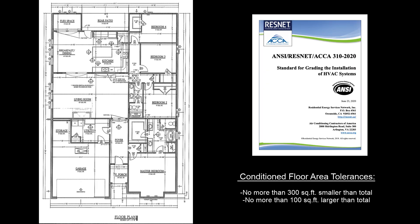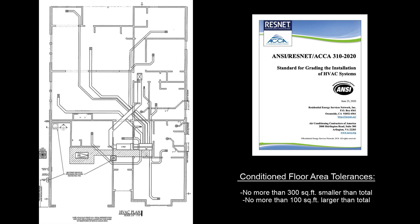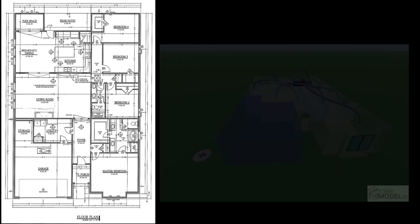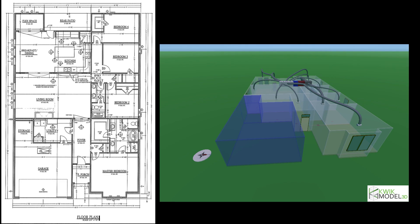Make sure the plans you use reflect the correct final layout of the house. Make sure that the conditioned floor area, window areas, and all of the exterior surface areas taken from the plans are reflective of the actual house. For new homes, Standard 310 allows for tolerances of 300 square feet smaller and 100 square feet larger than the current HVAC design, although it should be easy to be more accurate than this. Make sure you perform your load calculations for the actual orientation of the home. For new construction, the designer will have rotated the orientation around the compass and decided whether different size equipment was needed for different orientations. Typically, they will size equipment for the worst case orientation.